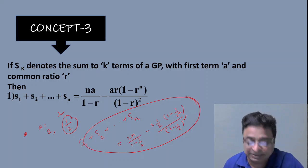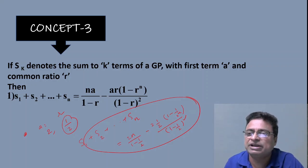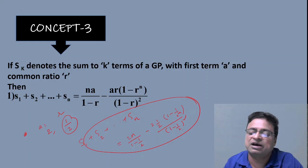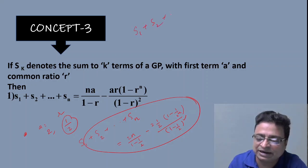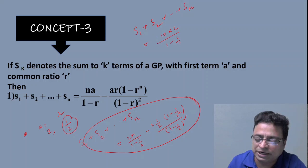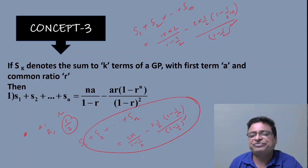In objective questions, they typically ask with specific values rather than generalized n, because students can verify options using particular cases like n = 1, 2, or 3. So they may ask: what is S₁ + S₂ + ... + S₁₀? With a = 2 and r = 1/2, immediately you write: 10·[2/(1−1/2)] − 2·(1/2)·[1−(1/2)¹⁰]/(1−1/2)², then simplify to get the answer.